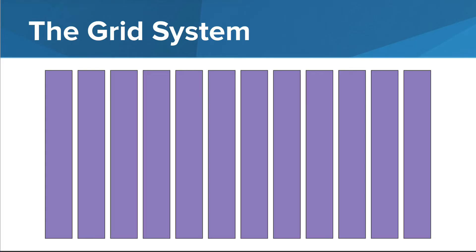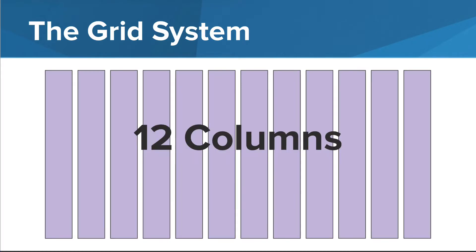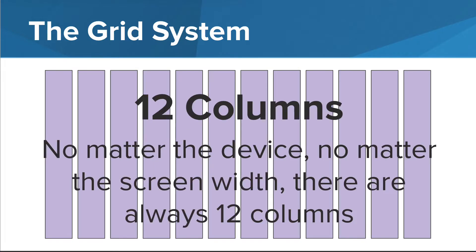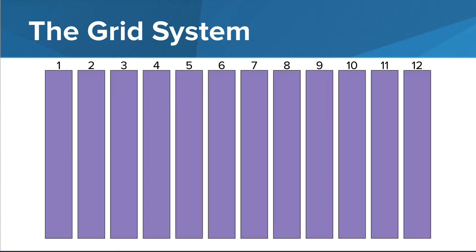We'll first divide our screen into columns. The Bootstrap grid system is based on 12 columns. No matter the device, no matter the screen width, there are always going to be 12 columns in the Bootstrap grid system. Beginning from the left side of the screen, the columns are numbered from 1 to 12.